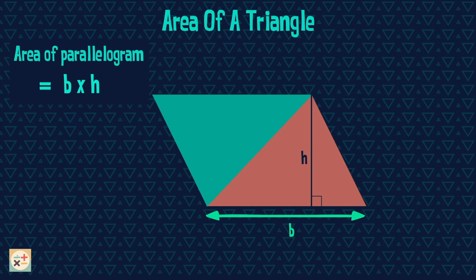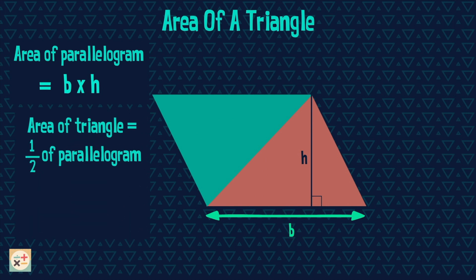Remember the parallelogram is made up of two of the same triangles. Therefore the area of the triangle would be half of the area of the parallelogram. So half of the base times height.